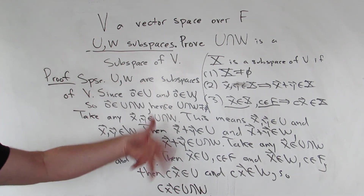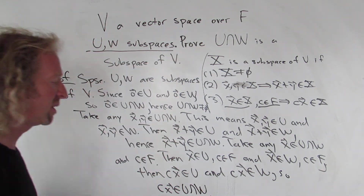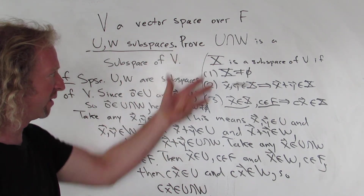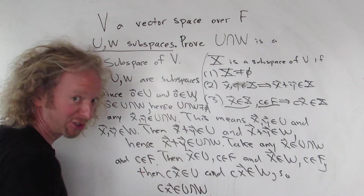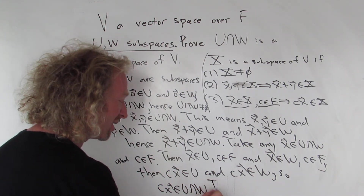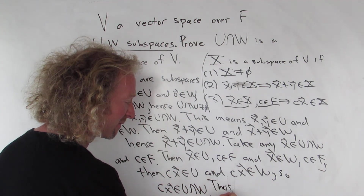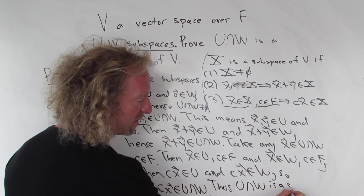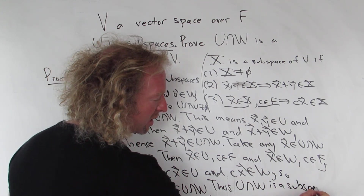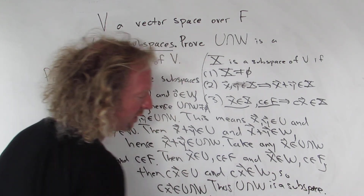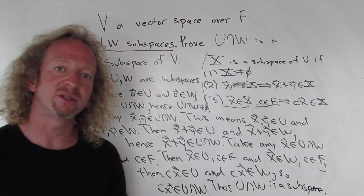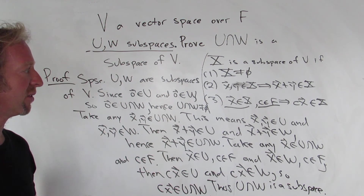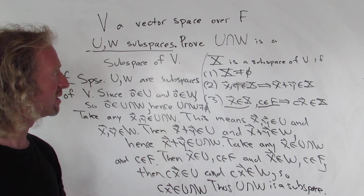That satisfies the third condition, so all three conditions are satisfied. Therefore, the intersection U ∩ W is a subspace of V. Hopefully that helps if you have to do this proof. Hope it made sense.